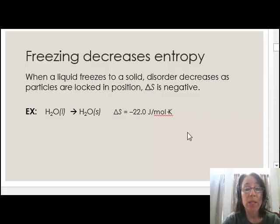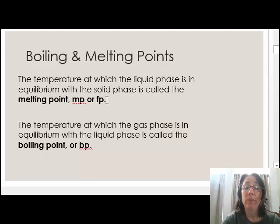At 0 degrees Celsius, melting and freezing are in equilibrium with one another. The melting point of any substance is the temperature at which freezing and melting are in equilibrium. Sometimes the melting point or MP is also referred to as the freezing point or FP.